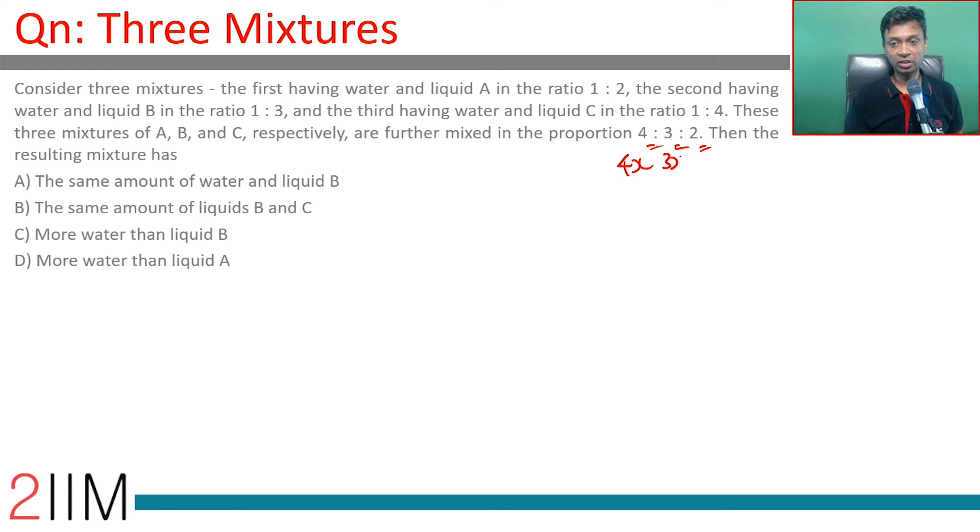Let's say 4x of A, 3x of B, 2x of C. How much of A, B, C, and water will be there? When liquid A is 1 is to 2 water is to liquid, so two-thirds is liquid A and one-third is water. So two-thirds of 4x would be A. Liquid B would be three-fourths of 3x. Liquid C would be four-fifths of 2x. Water will be 9x minus all of this.